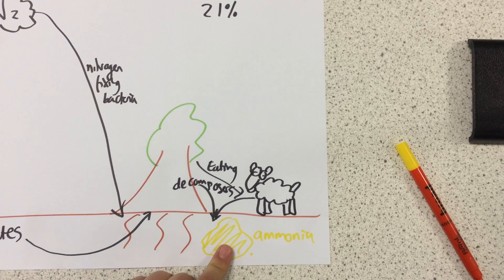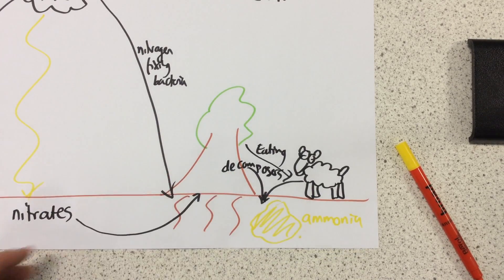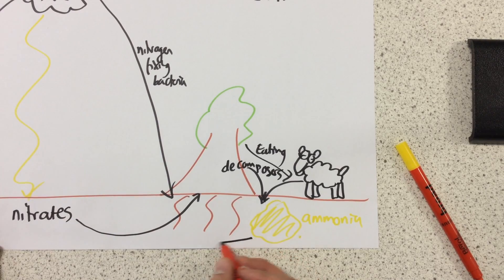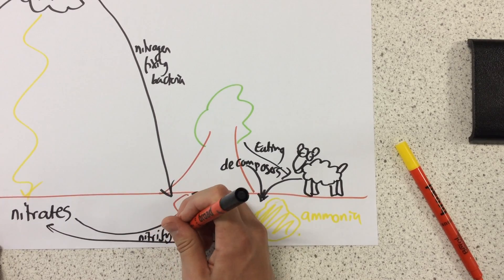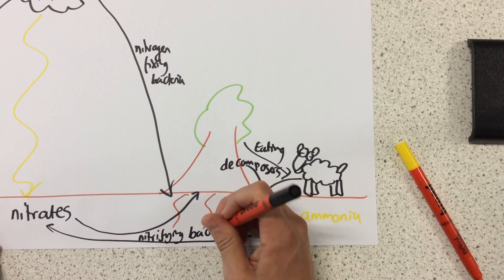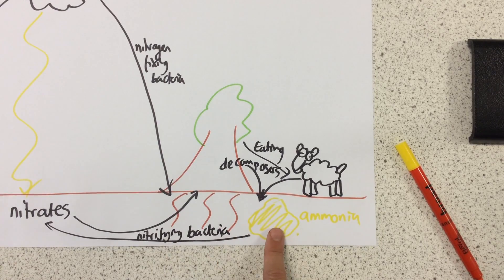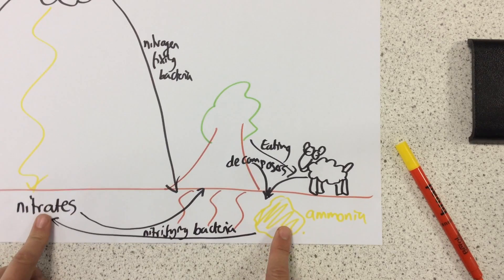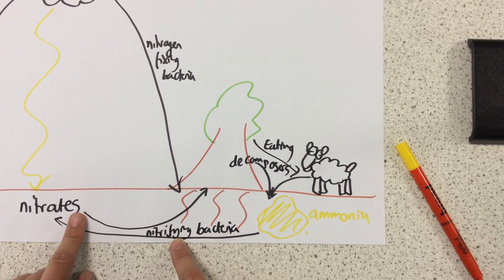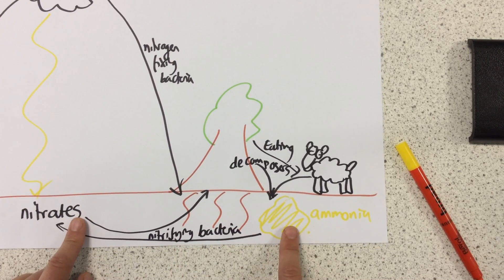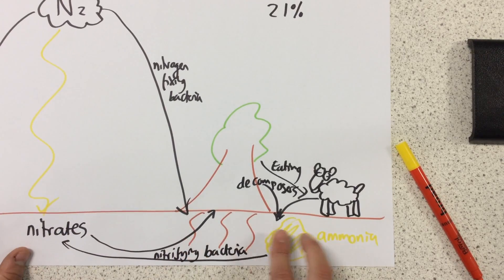We've now got this ammonia. What can happen to it? We're going to introduce the third type of bacteria we need to know about, which is called nitrifying bacteria. What nitrifying bacteria does is convert ammonia into nitrates. Think of the term 'nitrifying' as making nitrates. We can see the transition of nitrogen from ammonia to nitrates with our third type of bacteria.